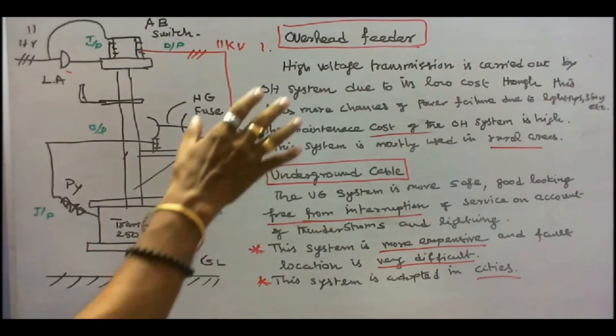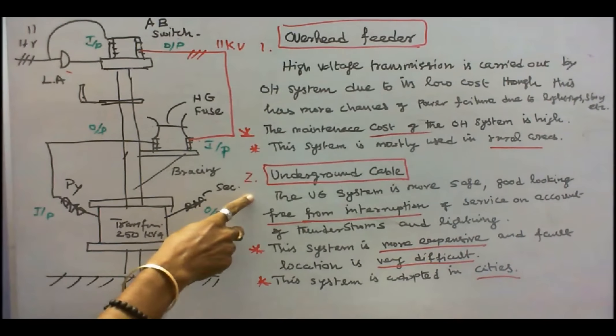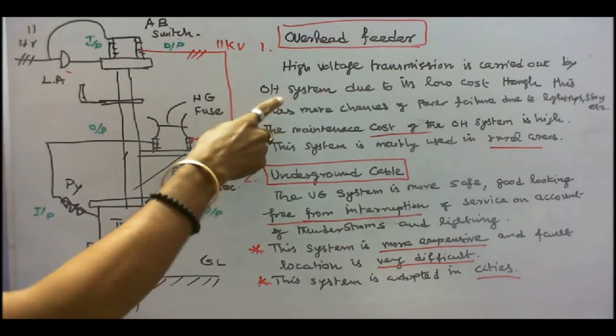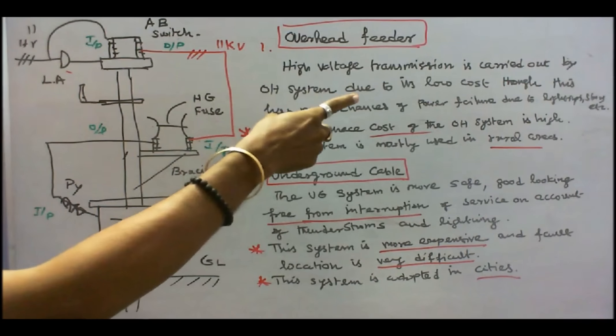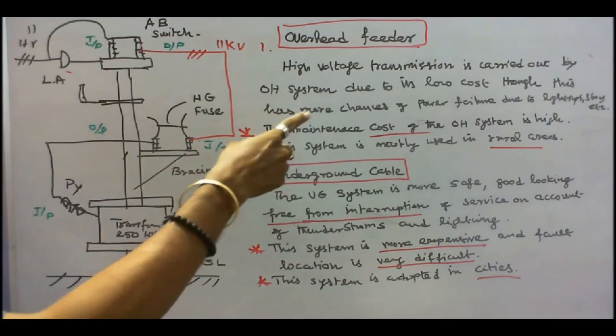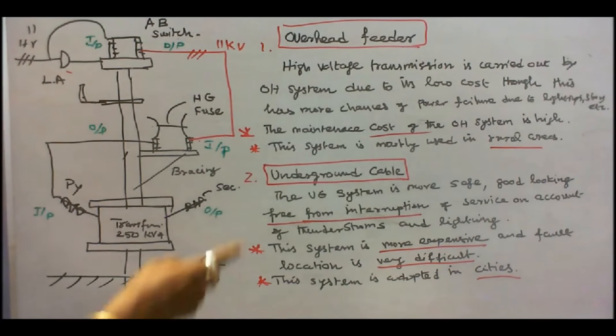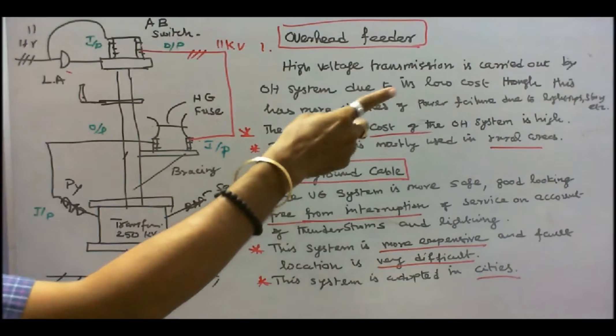Feeders are classified as overhead feeder, number two, underground cable. High voltage transmission is carried out by overhead system. Due to its low cost, though the system has more chances of power failure due to lightning, storms, etc. The maintenance cost of the overhead system is high. The system is mostly used in rural areas.